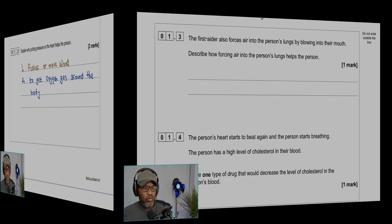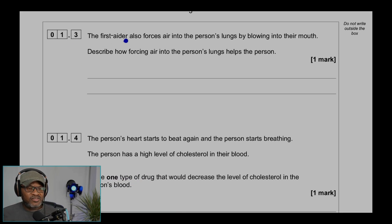Question 1.3: First aider also forces air into the person's lungs by blowing into their mouth. Describe how forcing air into the person's lungs helps the person. It provides oxygen gas for respiration to take place.